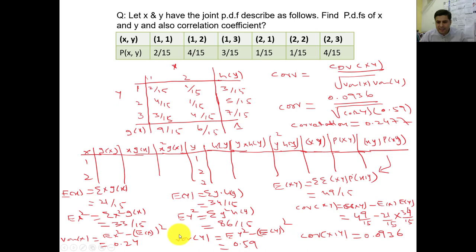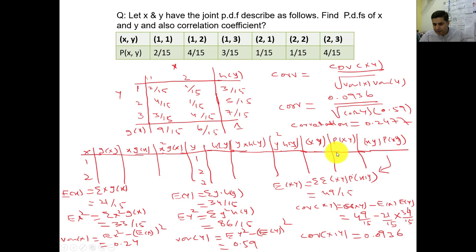For covariance, the formula is Cov(x,y) = E(xy) − E(x)·E(y). To calculate E(xy): construct the xy values — 1×1=1, 1×2=2, 1×3=3, 2×1=2, 2×2=4, 2×3=6 — multiply each by the corresponding joint probability p(x,y), and sum the double summation. E(xy) = 49/15. Therefore, covariance = 49/15 − (21/15)(34/15) = 0.0936.